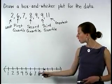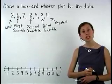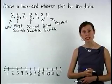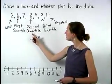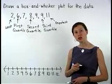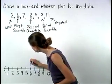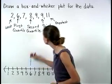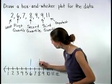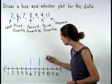First, draw a number line, then draw vertical line segments at the first, second, and third quartile, so here at six, at eight, and at nine.